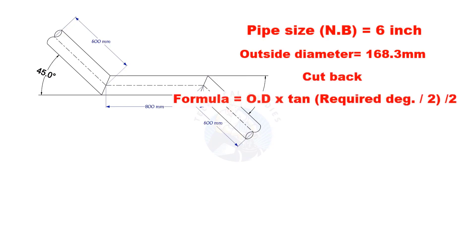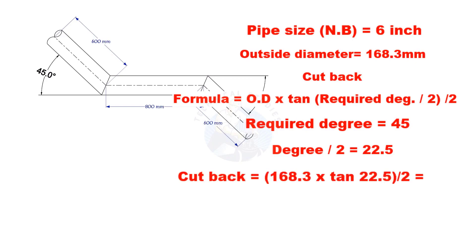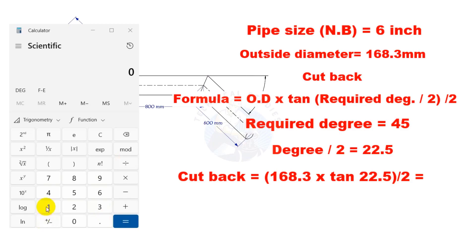Cutback is OD multiplied by tan half degree divided by 2. Here, the required degree is 45. Half of 45 is 22.5. Let us calculate. The cutback is nearly 35 millimeters.